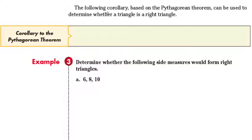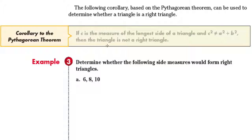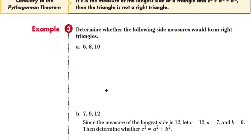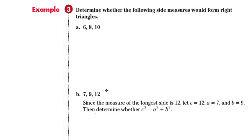The following corollary based on the Pythagorean theorem can be used to determine whether a triangle is a right triangle. Corollary to the Pythagorean theorem: if C is the measure of the longest side of the triangle and C squared is not equal to A squared plus B squared, then the triangle is not a right triangle. We know that C, the hypotenuse, is always our longest side.